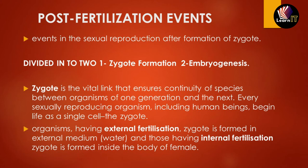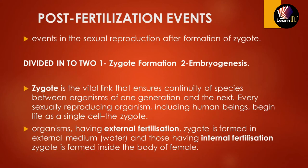Post-fertilization events are divided into two categories: zygote formation and embryogenesis. The zygote is the link between the continuity of species from one generation to the next. Every sexually reproducing organism, including humans, begins life as a single cell called the zygote. In external fertilization, the zygote is formed in an external medium such as water; in internal fertilization, it is formed inside the female body. External fertilization produces large numbers of eggs and sperm to ensure fertilization, while internal fertilization produces fewer eggs as it is more secure.